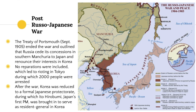In the post-Russo-Japanese War period, the Treaty of Portsmouth — negotiated in the US — ended the war. Russia ceded its concessions in southern Manchuria to Japan and renounced its interest in Korea, giving Japan the motivation and free hand to invest in Manchuria and extend into Korea. No reparations were included, which evoked a lot of hatred in the streets of Tokyo.